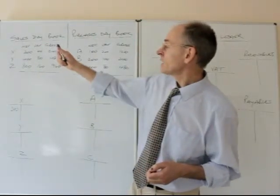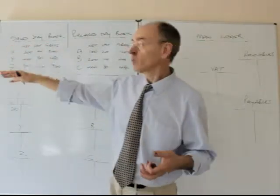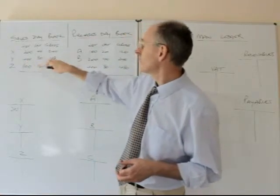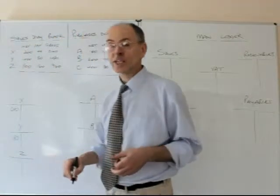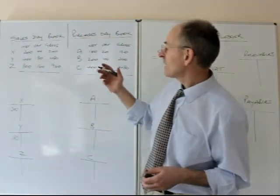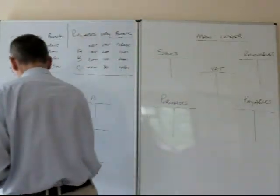Same thing for Y. Y's done, or we've sold to Y, £400 plus £80 VAT, £480 in total. So we're going to put £480 on Y's account, and similarly, we're going to put £960 on Z's account.